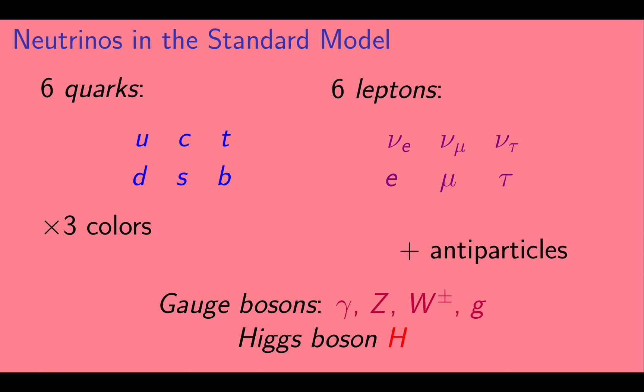The quarks are the up, down, charm, strange, top, and bottom. The leptons consist of three neutrinos and three charged leptons, the electron, muon, and tau.